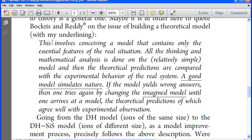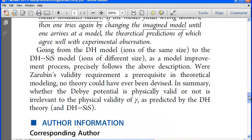So, this is what it means. It involves conceiving a model that contains only the essential features of the real solution. If the model yields the wrong answers, then one tries again by changing the imagined model until it arrives at a model, the theoretical positions of which agree well with experimental observation. So, he's defending, based on philosophical grounds, the fact that even though it's a useful model, even though you may not have any physical reality, as most models are only approximations of physical reality.